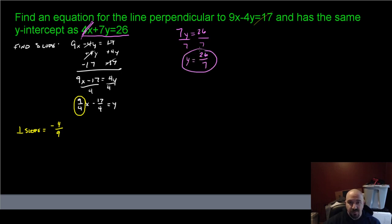So now, this is my y-intercept. It has this slope -4/9. It has this y-intercept 26/7. I can just plug this directly into the slope-intercept form without any other calculation. y = (-4/9)x + 26/7. And that's it.